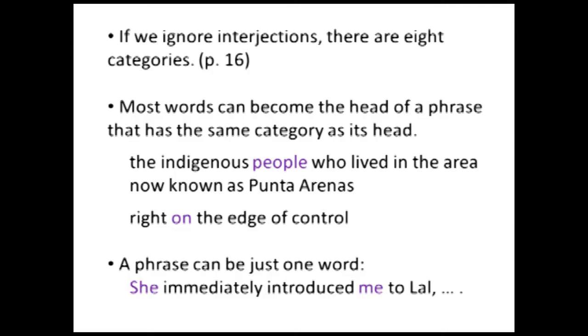As you see on page 16 of your book, if we ignore interjections — which is a class that's not too interesting to talk about and is small, although fun — there are basically eight categories. So when you're asked to find the category of a word in your analysis, pick one of those eight. Those really are the only choices that you have.